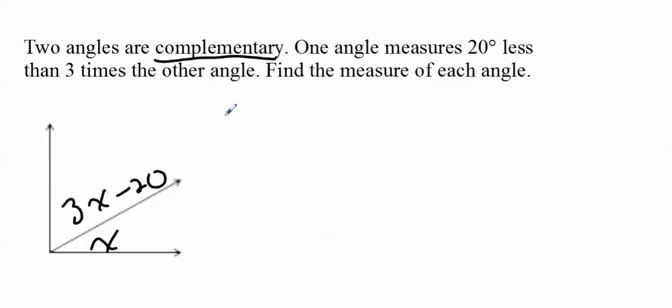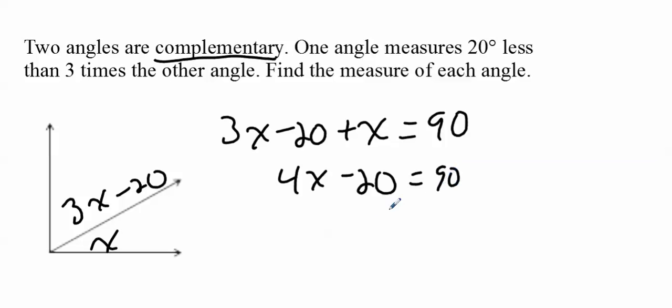So with that, knowing the complementary, you're going to say it's 3X minus 20 plus X equals 90 because that's complementary. So now you have 4X minus 20 equals 90. You can add 20 to both sides.